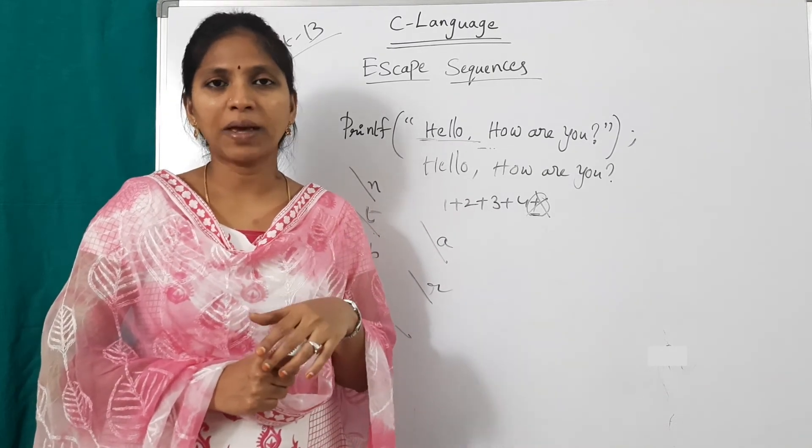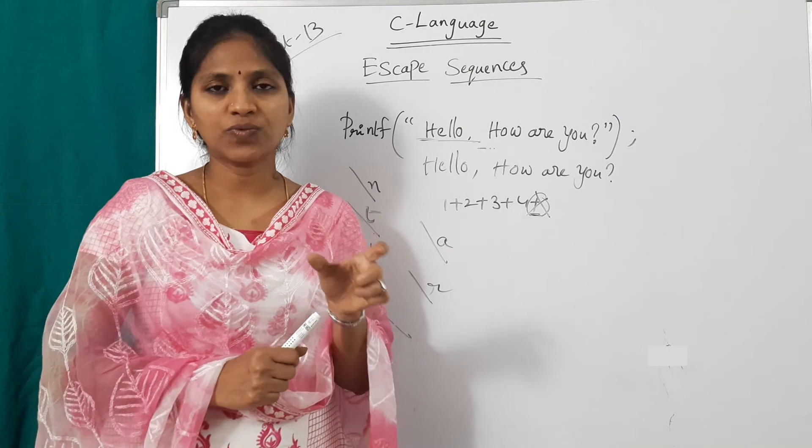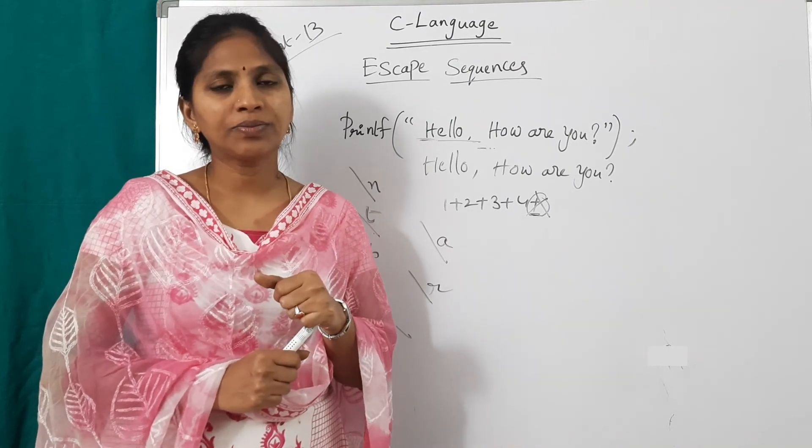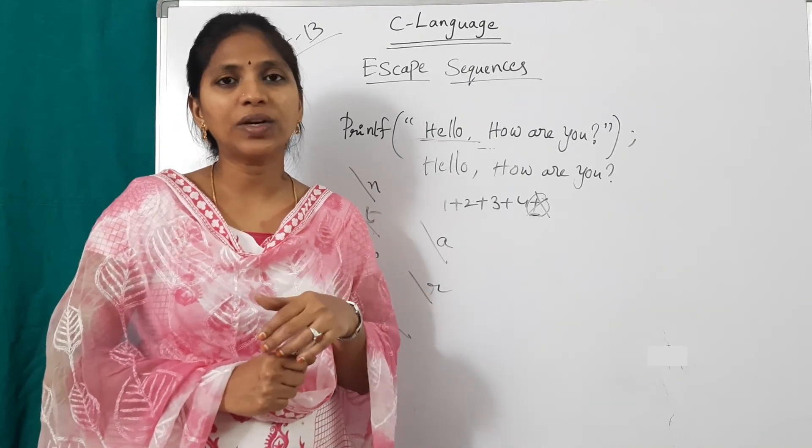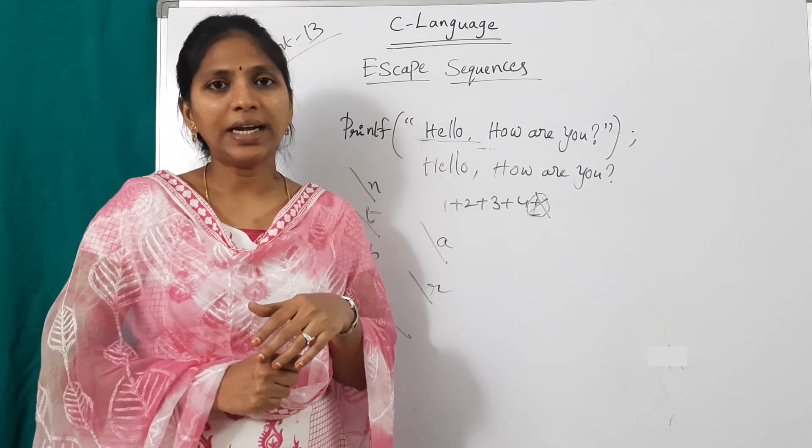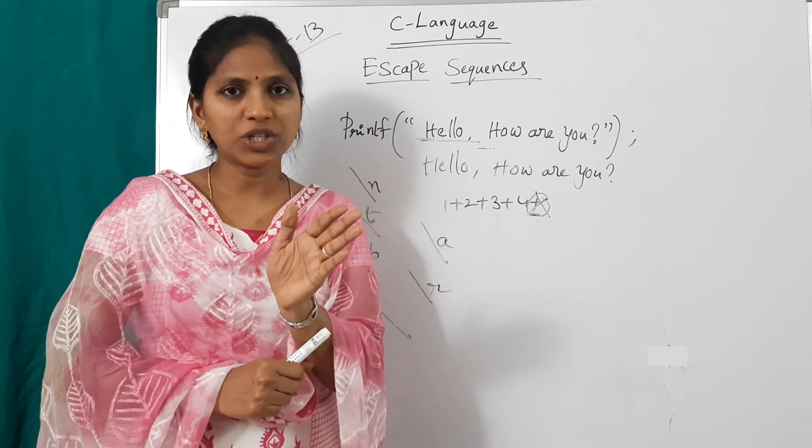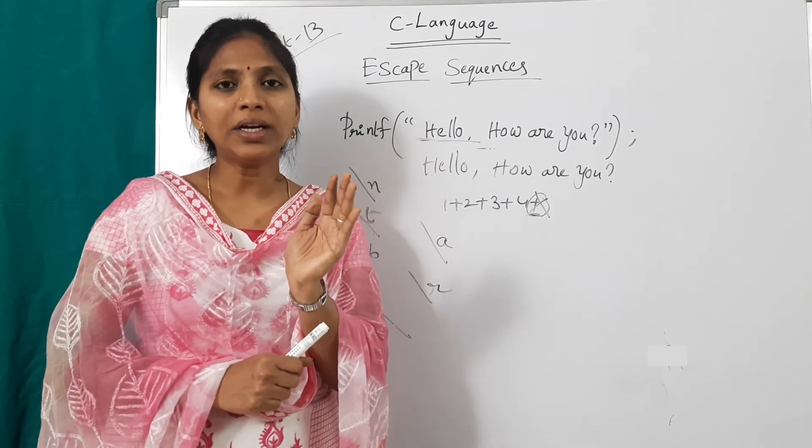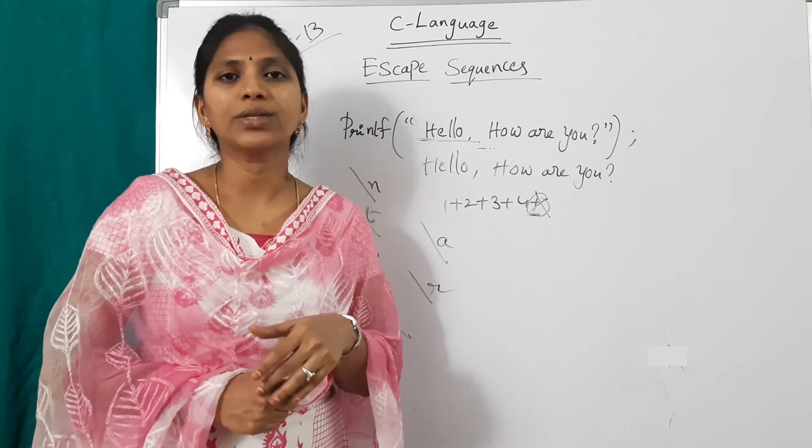Slash b is for backspace. And slash a is for beep sound. And slash r is for carriage return. And slash quotation marks to print quotations at result screen.